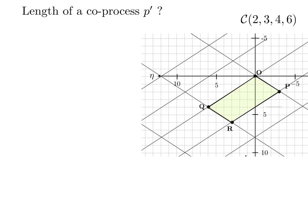We deduce the length of a co-process by starting from the origin and going in the direction of the eta axis until for the first time we meet a point 0 eta equivalent to the origin.